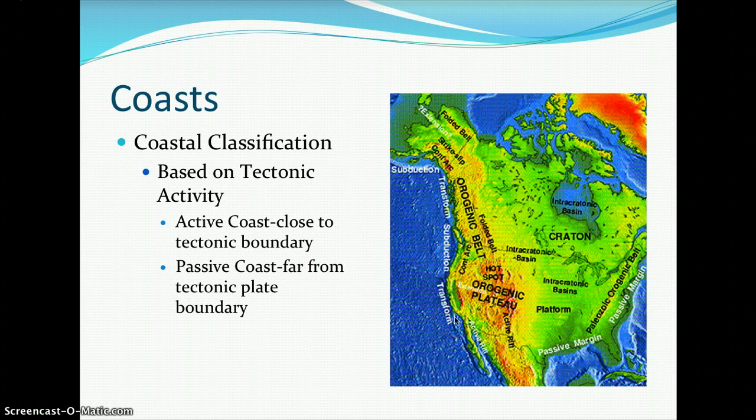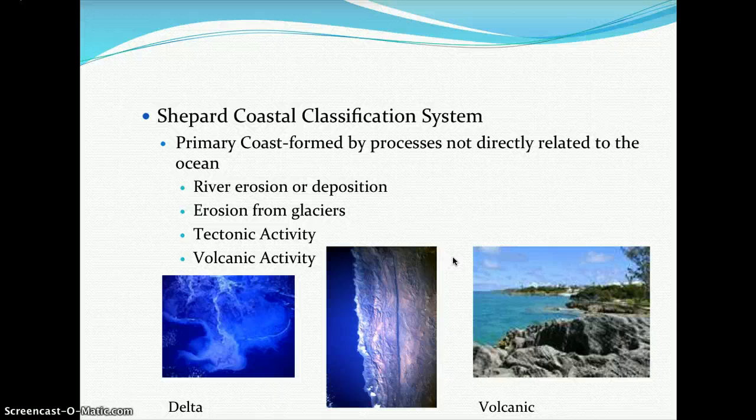The Shepard Coastal Classification System states that a primary coast is formed by processes not directly related to the ocean. Primary coast formation is caused by river erosion or deposition, erosion from glaciers, tectonic activity, and volcanic activity.